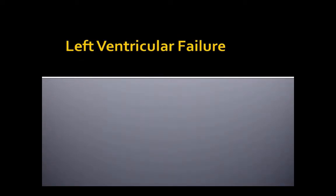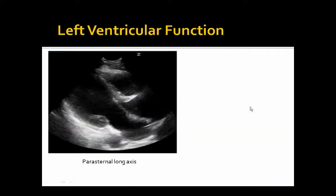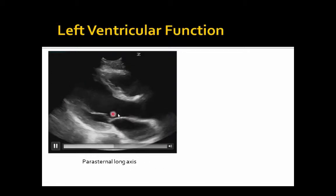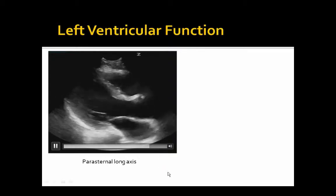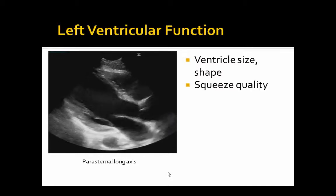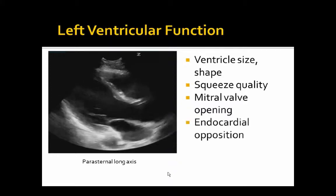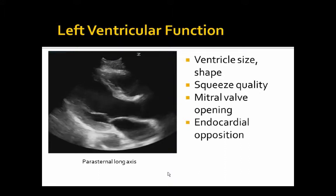Let's go on to signs of left ventricular failure. This might be the patient with a history of COPD who also has CHF and is short of breath, or a patient in shock where you're trying to differentiate cardiogenic from other types. Before we get into failure, let's do a reminder of normal cardiac function. In the parasternal long axis view, notice the volume change — that anterior mitral valve leaflet comes up and hits the septum during early diastole, the valve opens wide, and the endocardium comes together with at least 50%, probably 60–65% volume change.